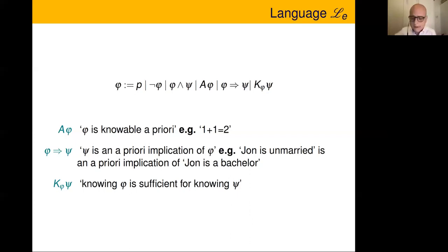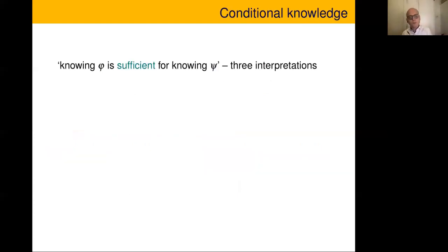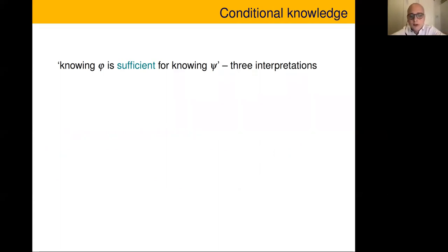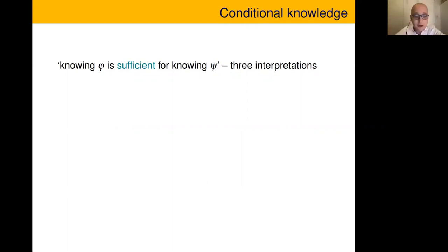Now, 'knowing phi is sufficient for knowing psi' is deliberately vague because there are at least three different interpretations of what you might mean by it. These are prominent interpretations in epistemic logic, and depending on which one you're after, you're probably looking for a slightly different logic. It's interesting to have them all on the table so we can distinguish them rather than conflating them.